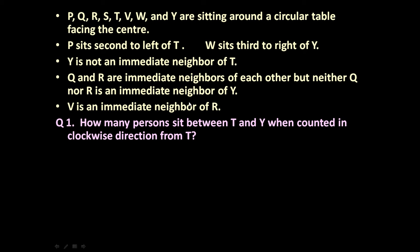This information is given. Based on this, the question is: how many persons sit between T and Y when counted in the clockwise direction from T? Whenever such types of problems are asked, there is always more than one question.